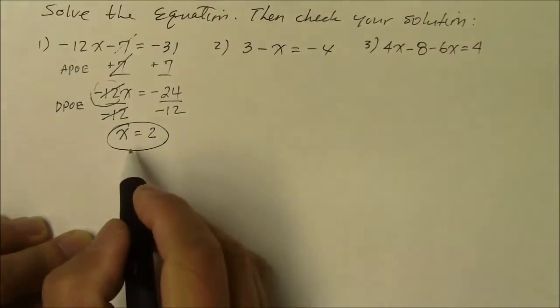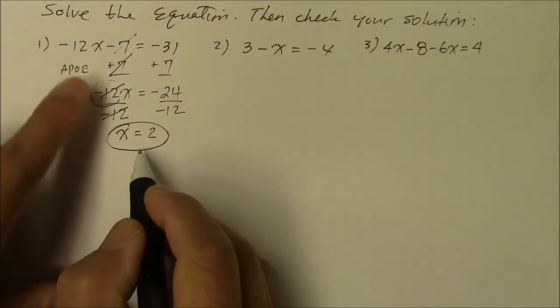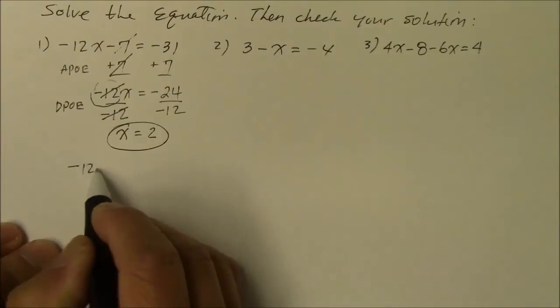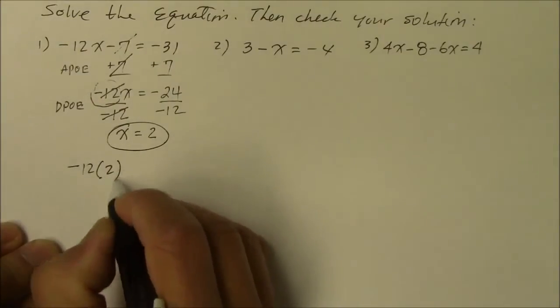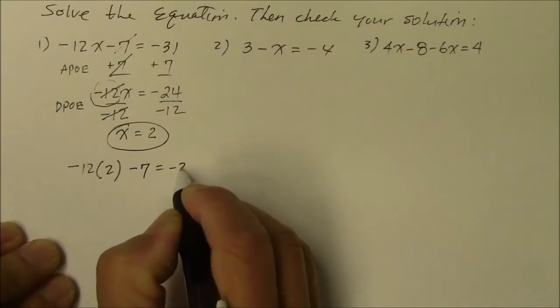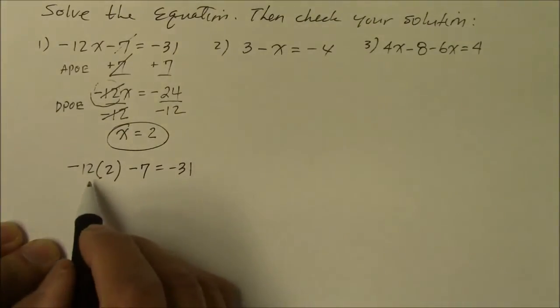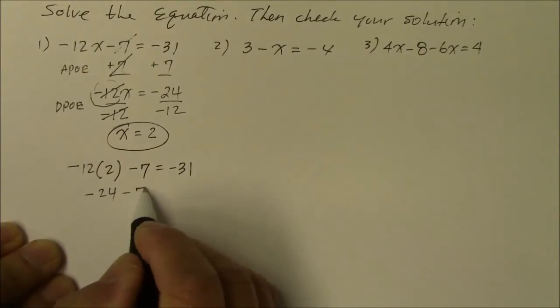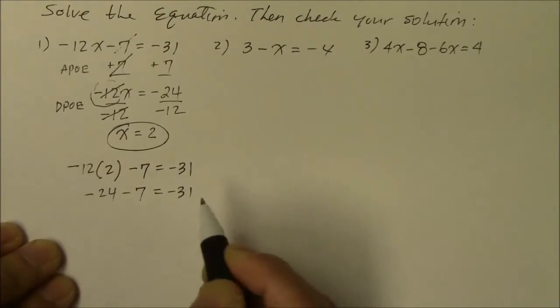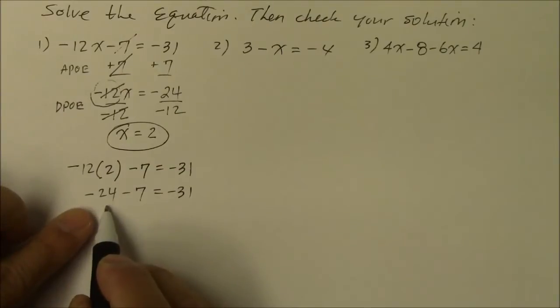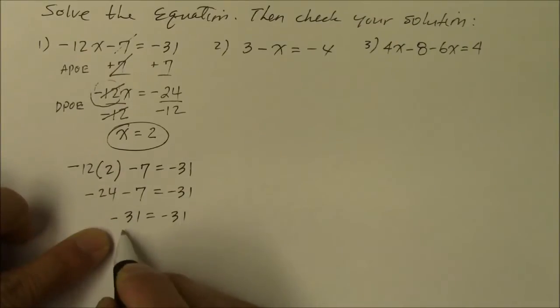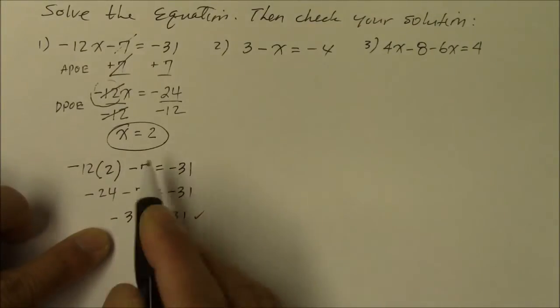And here I used division property of equality. Now it says to check. To check it, we're going to take x equals 2 and substitute it back into the original equation. So negative 12 times 2 minus 7, does that equal negative 31? Negative times a positive is negative 24 minus 7. This is like taking out $24 from the bank and taking out 7 more. Together, you took out a total of negative 31. Since the left side equals the right side, that's a good answer.